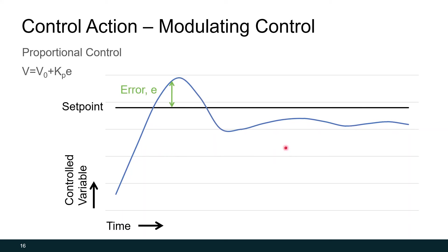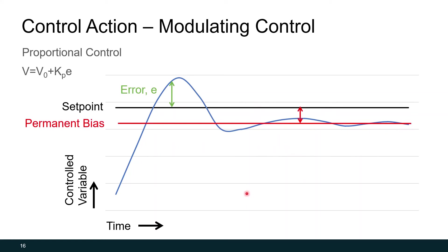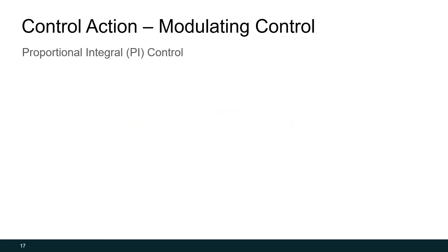Unfortunately, in proportional control that stable position is still not at our set point, but it is consistent. We call the difference between the set point and where we end up our permanent bias, and every proportional control response will have permanent bias. The difference is, we've achieved something we couldn't with two-position and floating control — a stable control point. To remove this permanent bias, we can add another term to our equation, and we call this proportional integral control.